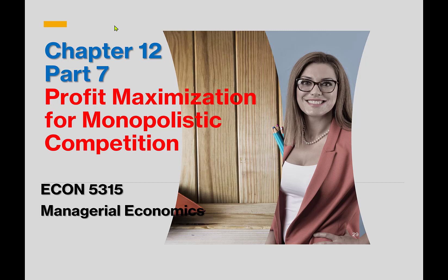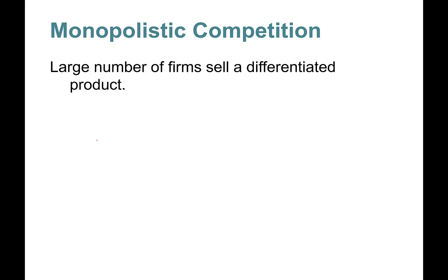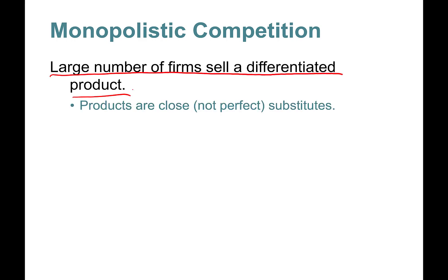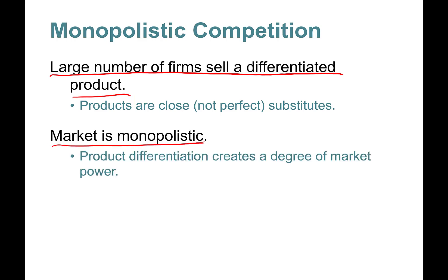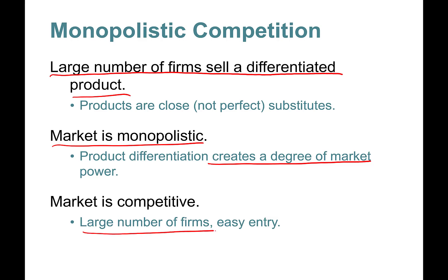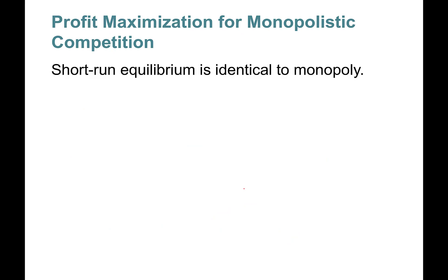Chapter 12, Part 7: Profit maximization for monopolistic competition. Let's remember what monopolistic competition entails: there are a large number of firms that sell a differentiated product. Products are close but not perfect substitutes. The market is monopolistic in that product differentiation creates some degree of market power, but it is also competitive due to the large number of firms with easy entry threatening long-run profitability.